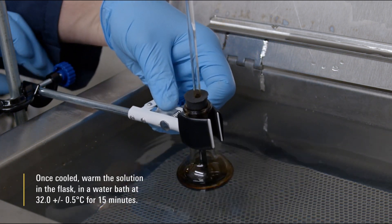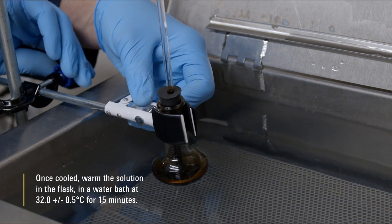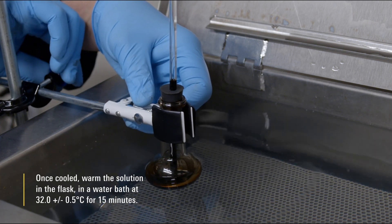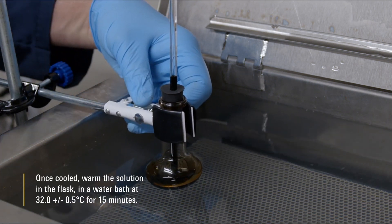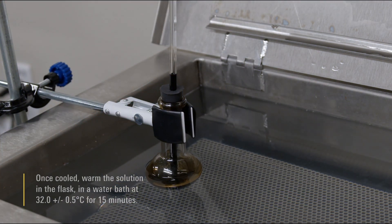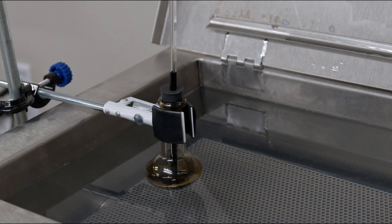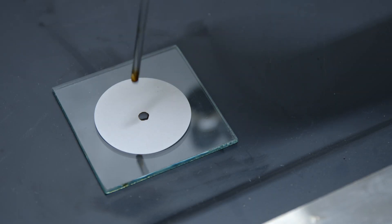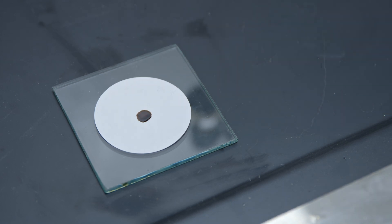Once cooled, warm the solution in the flask in a water bath at 32.0 plus or minus 0.5 degrees Celsius for 15 minutes. Stir the sample thoroughly. While the sample is warm, use a clean stirring rod to place one drop of solution on the filter paper.